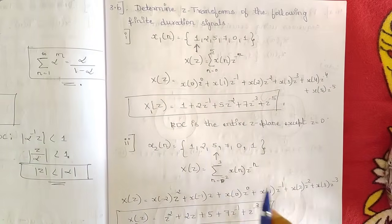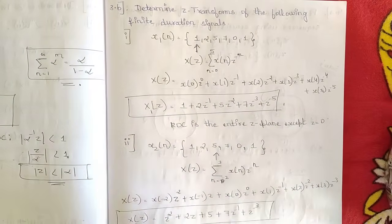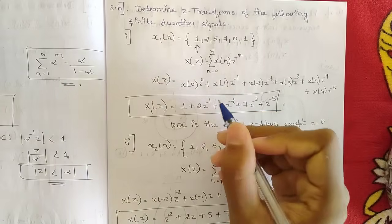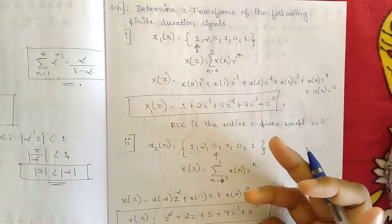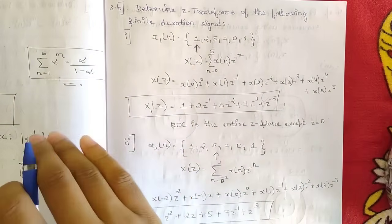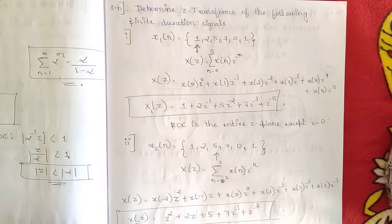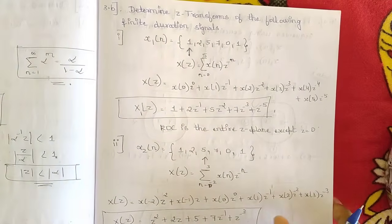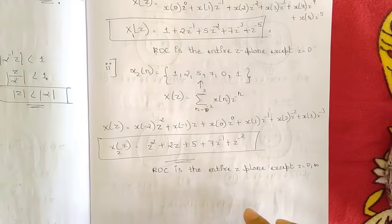The ROC for this finite sequence is the entire z-plane except z = 0. If z = 0, the terms like z^(−1) = 1/z tend to infinity, making X(z) undefined. So any value of z except zero is valid for the ROC.